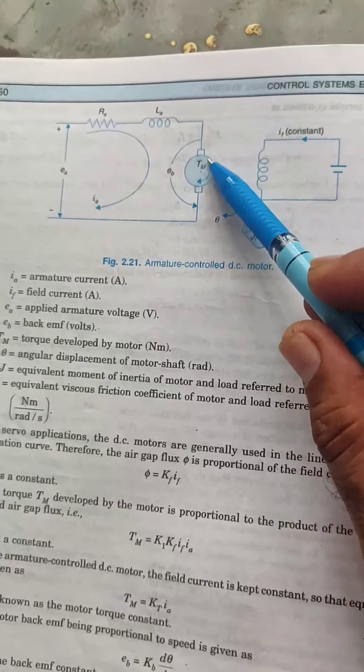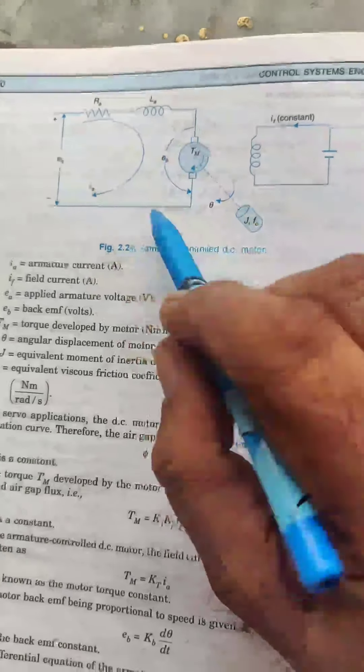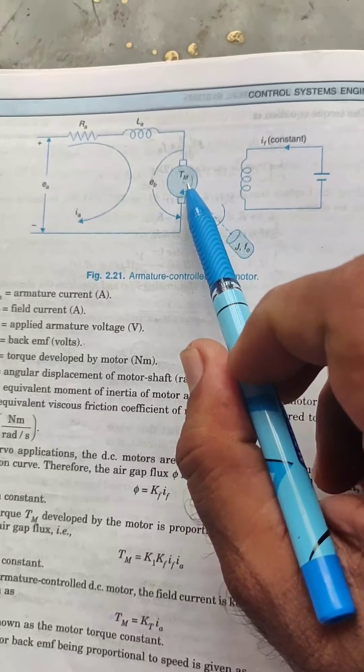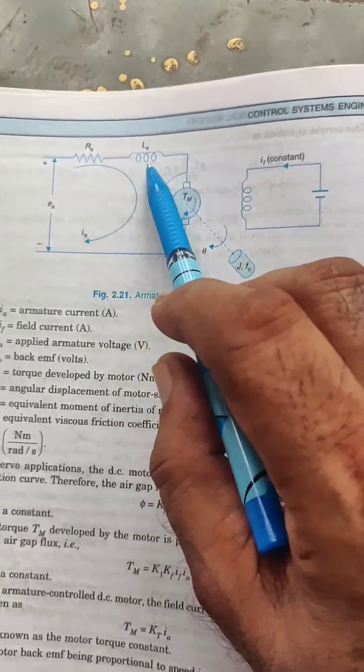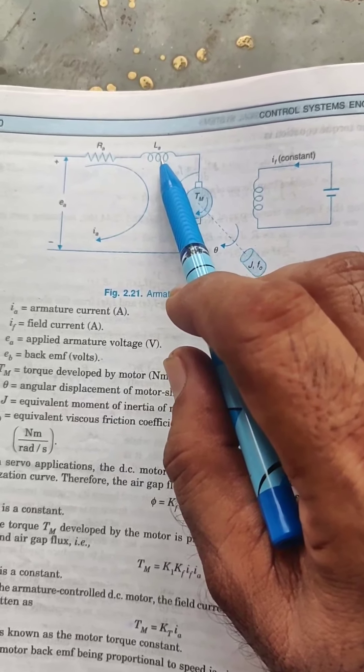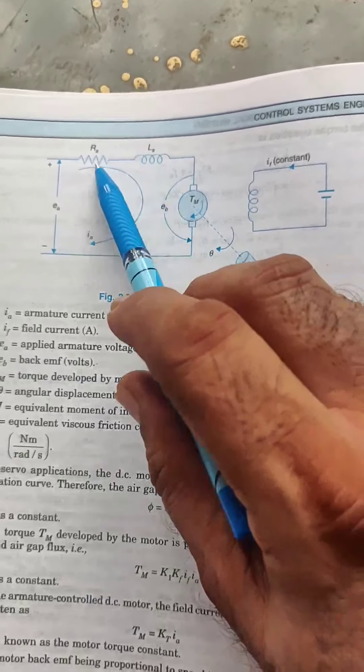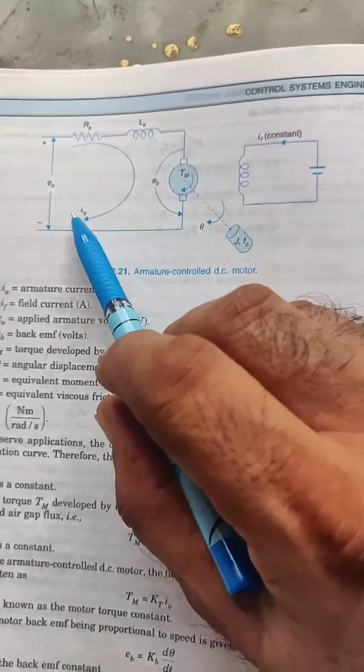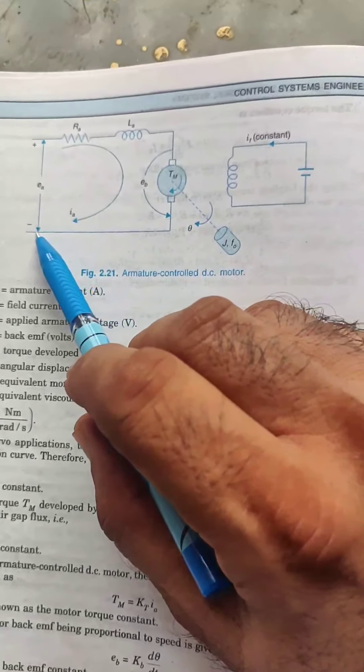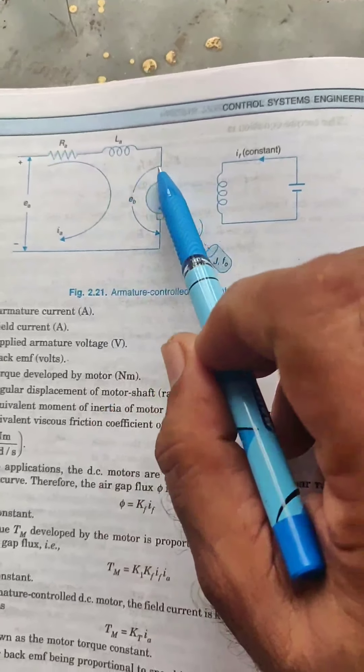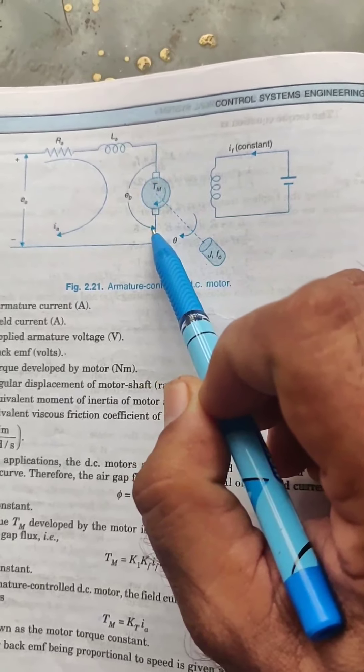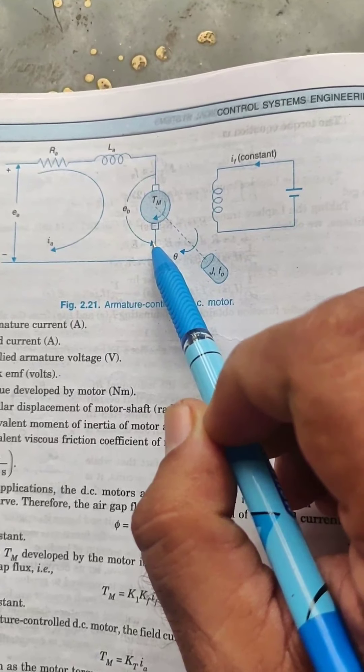As shown, this is simply a DC motor, two brushes are there and the winding resistance is shown in the form of resistance as shown in the circuit. The inductance of the winding is shown as LA and RA, the armature current is IA, and the back EMF generated in this armature is EB.